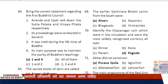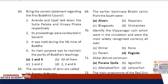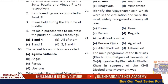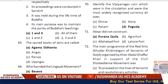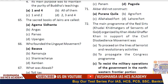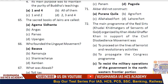Question: Identify the Vijayanagara coin which was in circulation and was the most widely recognized currency — the answer is Pagoda.